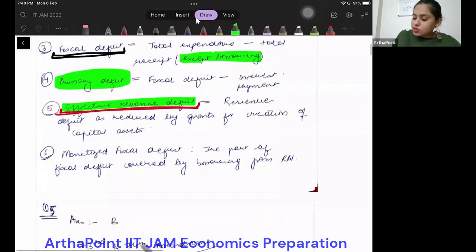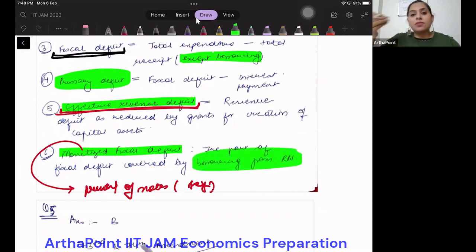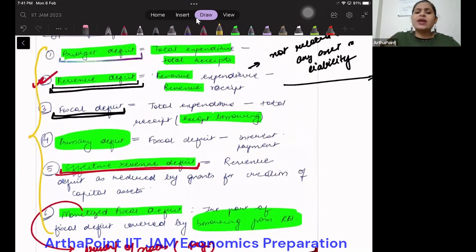And finally, we have something which is known as monetized fiscal deficit. What is monetized fiscal deficit? The part of fiscal deficit which is covered by borrowing. What is monetization? Monetization is printing of notes. So I understand that in a way it's seigniorage. I've created my notes. Now, that part of the deficit which I want to finance through these borrowings, by borrowing money from the central bank, by creating notes, by monetizing the debt, that is called monetized fiscal deficit.